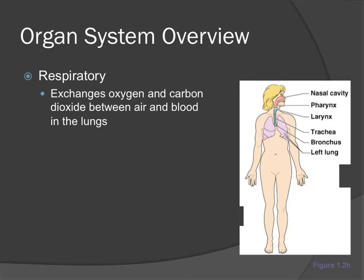The respiratory system — its anatomy includes your nasal cavity, the pharynx, the larynx, the trachea, the bronchus, and the lungs. The physiology is that it exchanges oxygen and carbon dioxide between air and blood in the lungs.